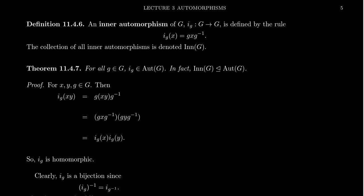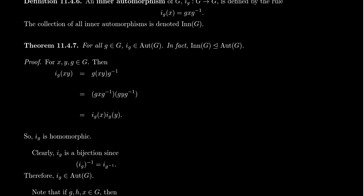These things are automorphisms — we have to prove that, but we can actually prove something better. We can show that the collection of inner automorphisms forms a normal subgroup of the automorphism group — not just a subgroup, but a normal subgroup. This subgroup is closed under conjugation, which makes sense when you think of inner automorphisms as those conjugating automorphisms.